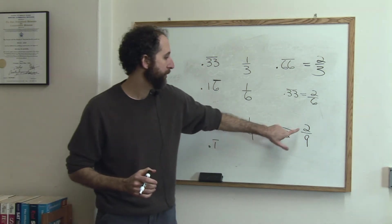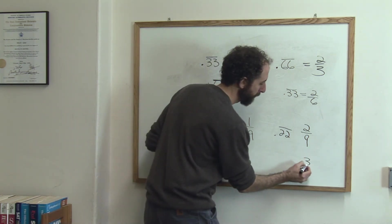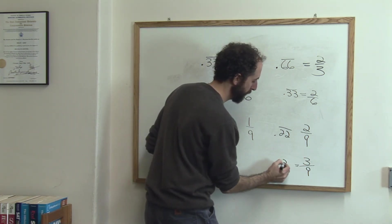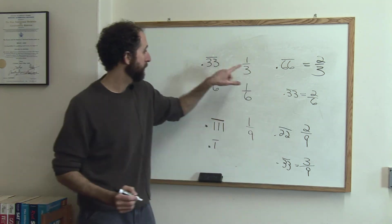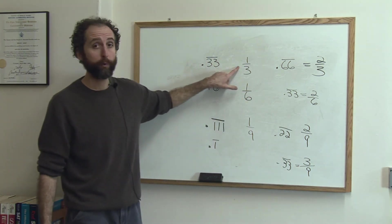So whatever you have here, two-ninths is going to be .22. Notice, three-ninths is .33 repeating, which matches this, and that's because three-ninths reduces to one-third.